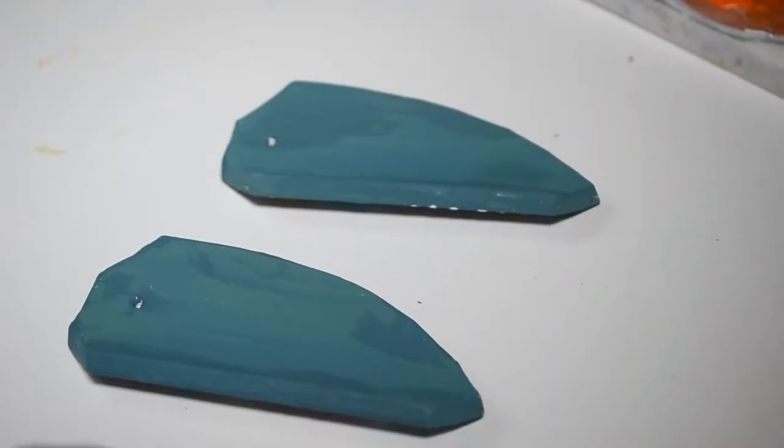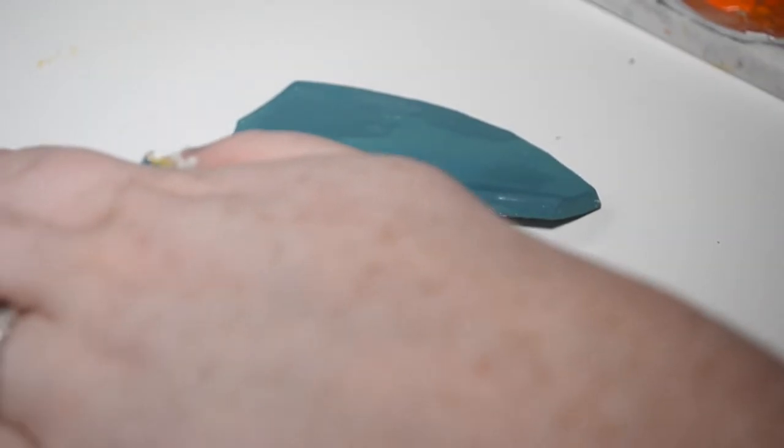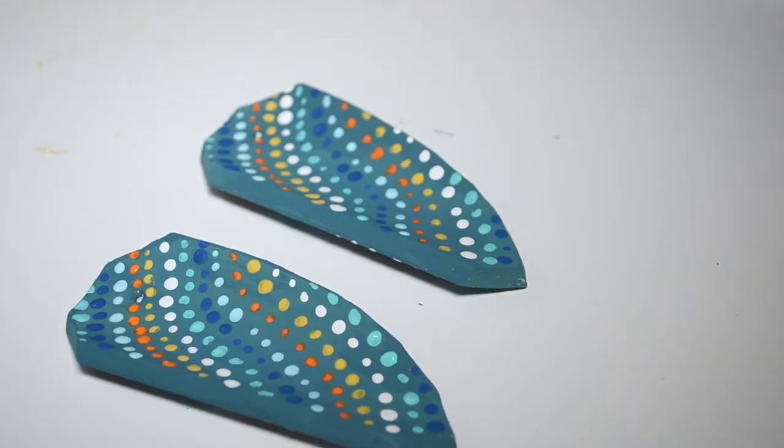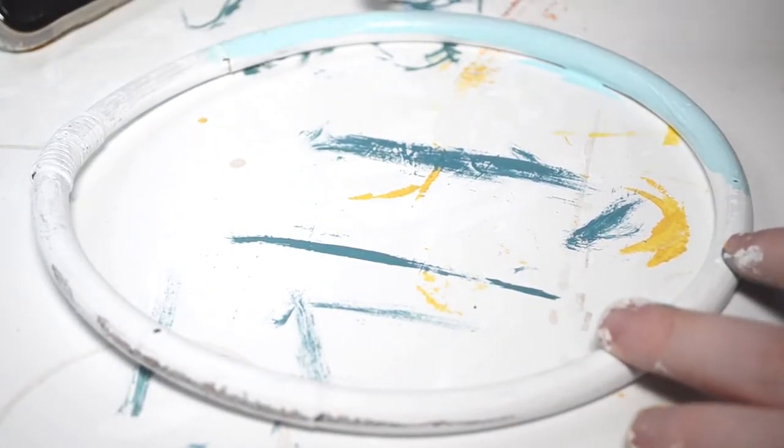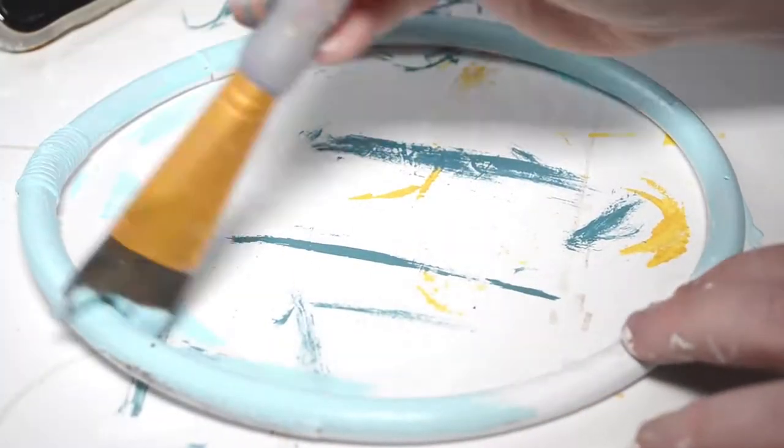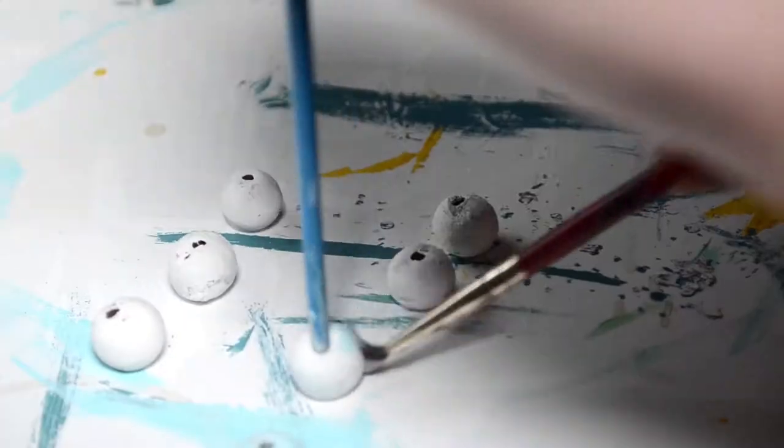I flipped them over and did some more dot work on the other side. I decided to paint the circle light blue. I almost left it white but nothing else was really white so I decided to do light blue.